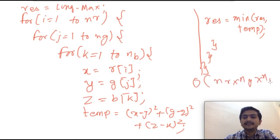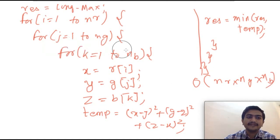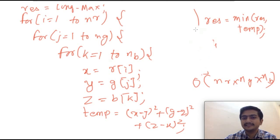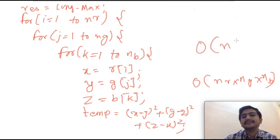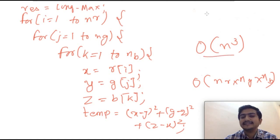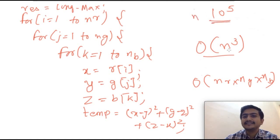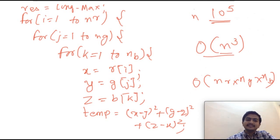This brute force has complexity O(NR × NG × NB). If all values are equal to N, that's O(N³). Since each can range up to 10⁵, an O(N³) solution will obviously fail. So we need a better approach.